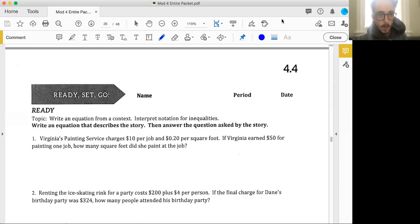We're looking at 4-4, the Ready, Set, Go. I hope you're having a great day. If you need a physical copy of this, I'm going to link that on this Edpuzzle, so feel free to click that link or see if you can pop into school and get one from the vestibule. Here we go, 4-4. With the Ready, we're writing an equation from a context, interpret notation for inequalities, write an equation that describes the story, then answer the question asked by the story.